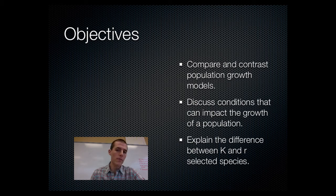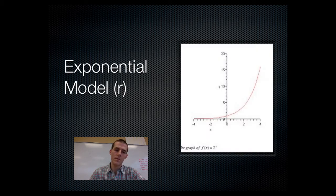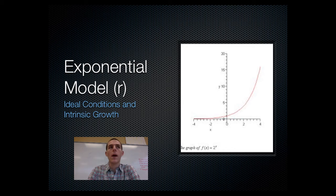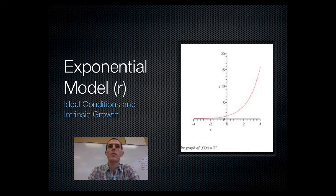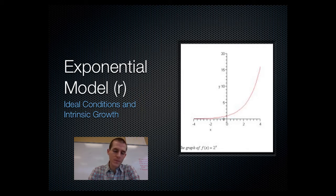So that's what we need to talk about, let's go ahead and get going. There are different models — by model I mean a mathematical model that describes the growth of a population. Mathematical models are basically used to show what the population of a group of organisms is going to be at any given point in time.